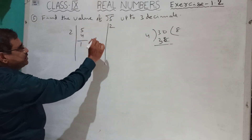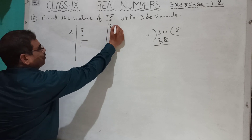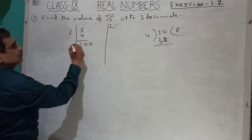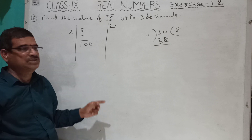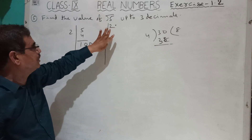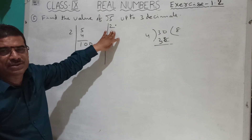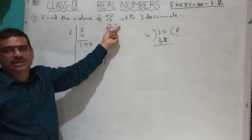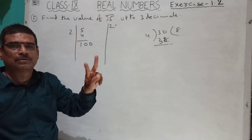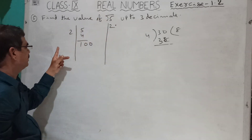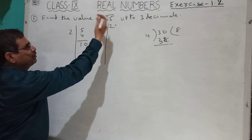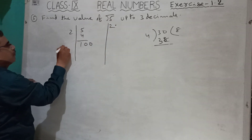Here nothing is there, so you have to put a point here and bring down 2 zeros. The third point is: whatever number is there, you have to multiply that number with 2 and write the answer. Here 2 is there, so I am multiplying with 2. 2 twos are 4.